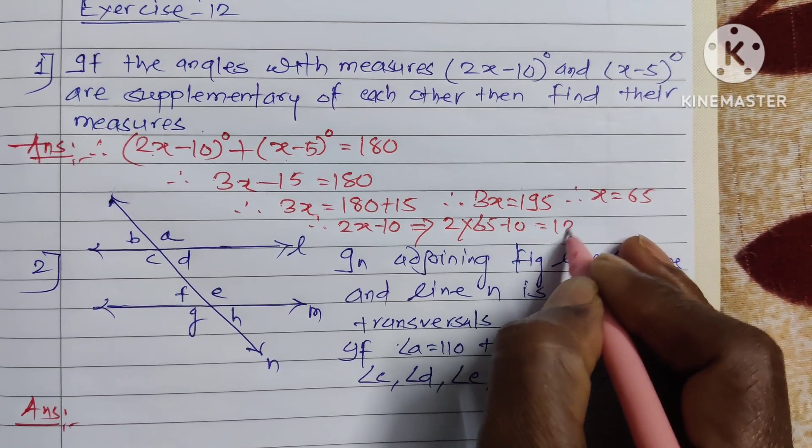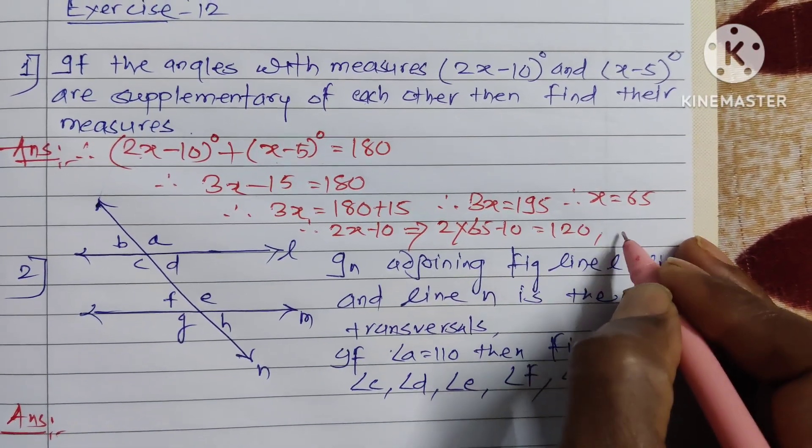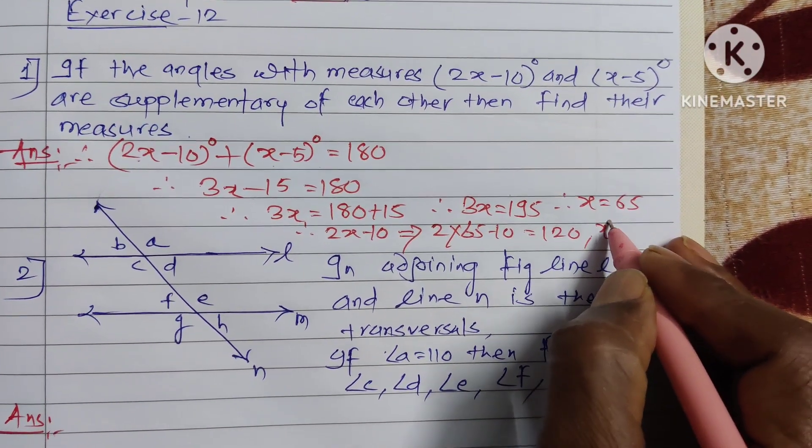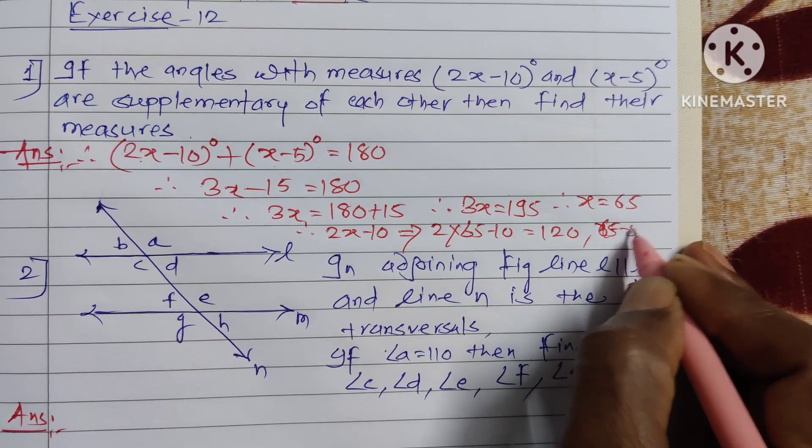That means 120, and another angle is x minus 5, which means 65 minus 5 equal to 60.